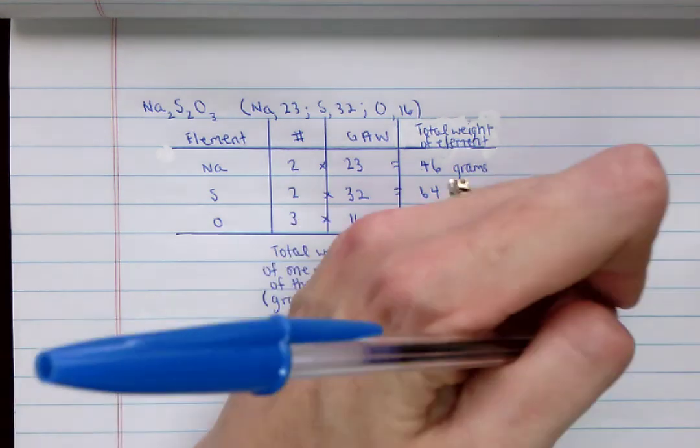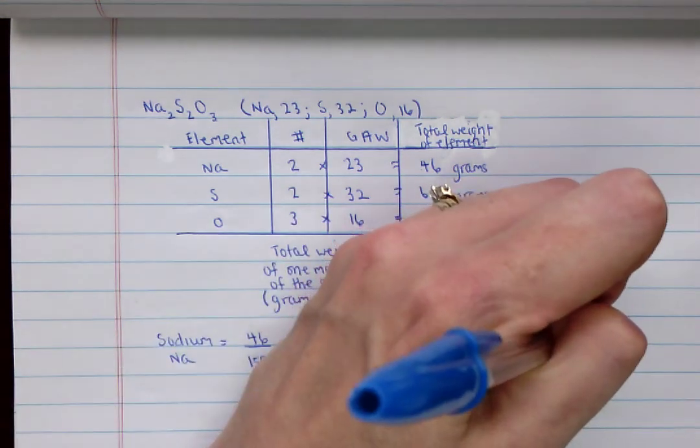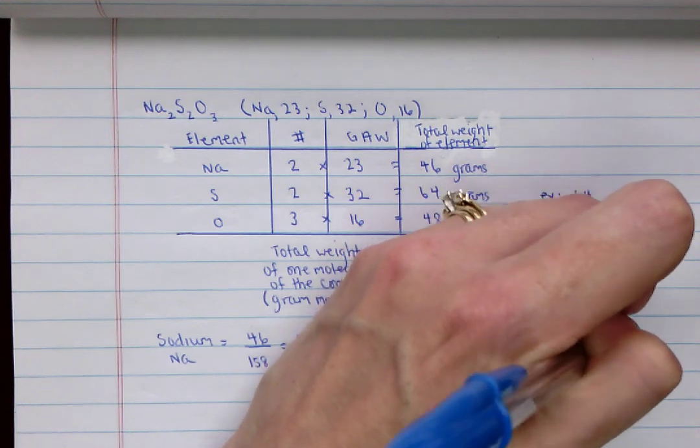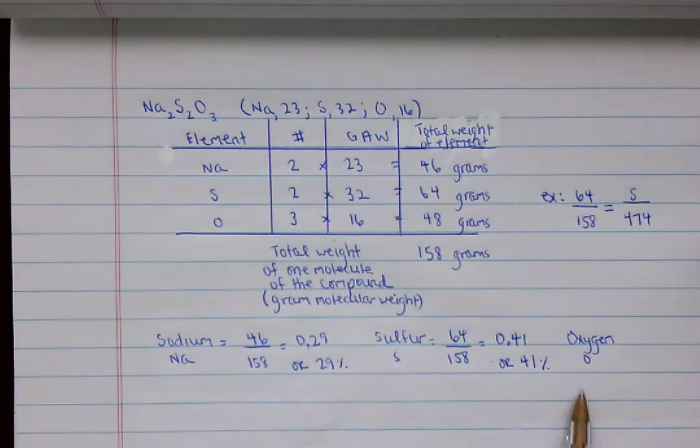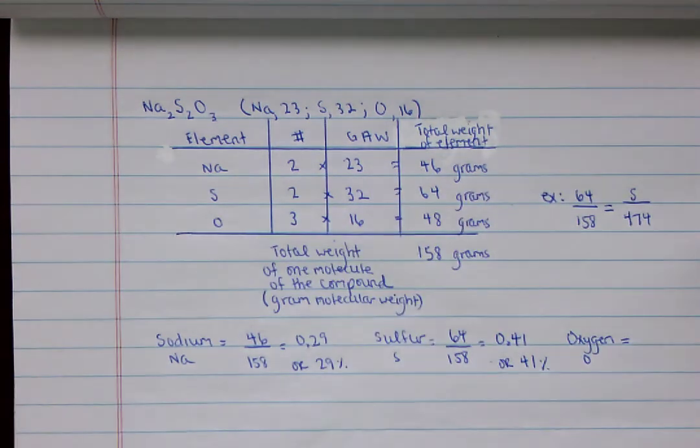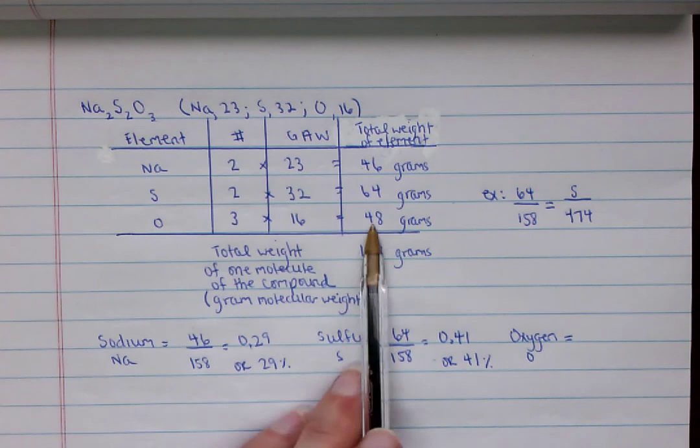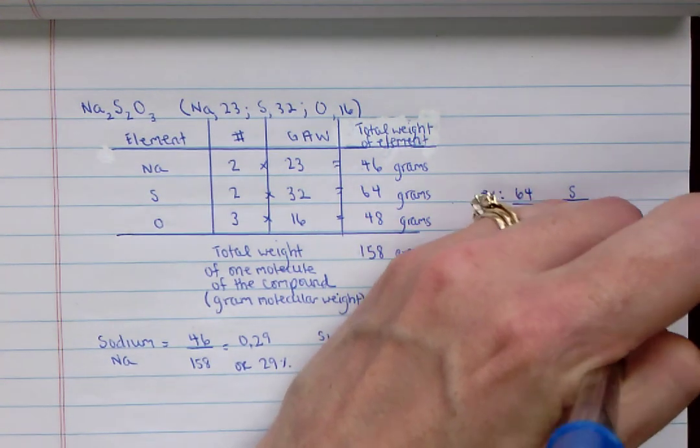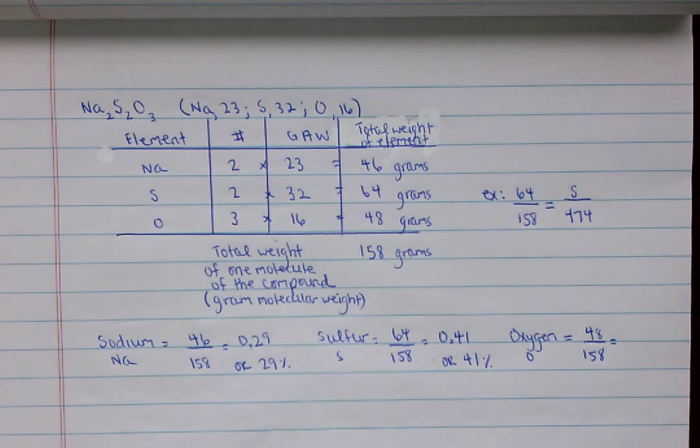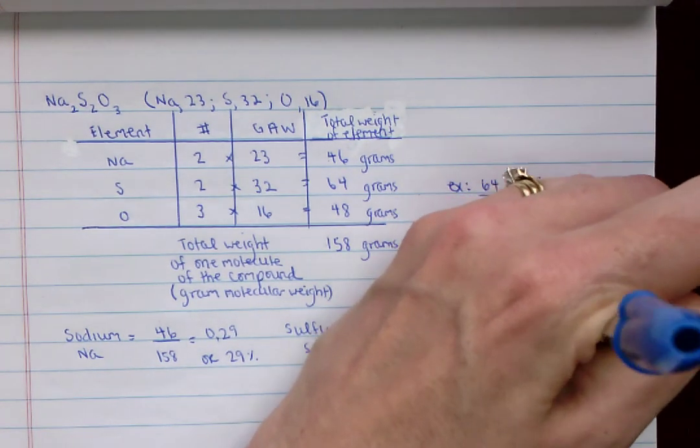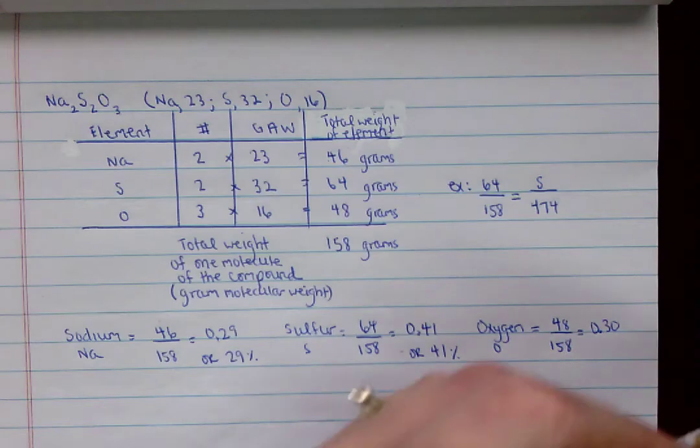And then for the final one, we've got oxygen designated by O, and then that one again is 48 out of 158. And then you end up with 0.3, or 0.30, and that's 30%.